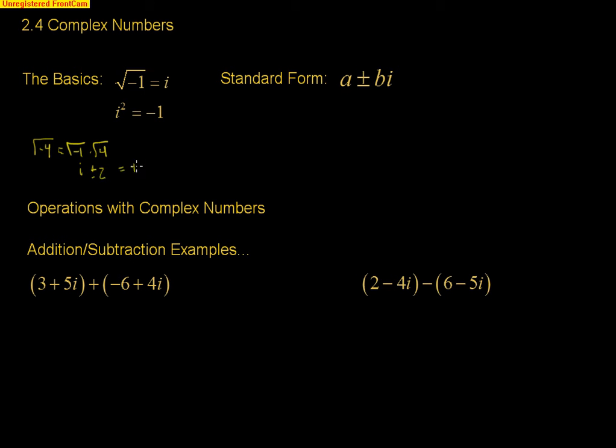So, therefore, your answer is plus or minus 2i. That's how you would do that to pull out that negative. And then you just reduce a radical the same way you did back in Algebra 2 and Algebra 1.